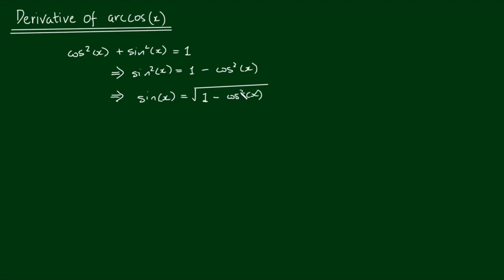Which I'm going to write as [cos(x)]² in brackets. And let's call this equation 1.